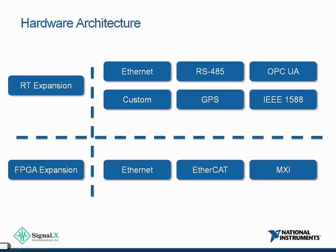All FPGA expansion options enable high-speed control and high-level determinism back to a central or distributed network. Ethernet RIO is an Ethernet expansion of an FPGA — a real-time or Windows application can talk to that expansion chassis, enabling the high-speed FPGA to communicate over long distances to a centralized processor. It allows high-level determinism at the FPGA, but communication to the host is not deterministic. EtherCAT RIO, on the other hand, does allow deterministic communication, especially among nodes, making it the right choice if you need high synchronization among control loops — though you give up data throughput to achieve that.